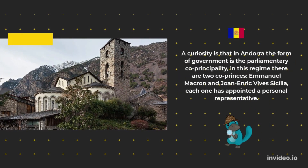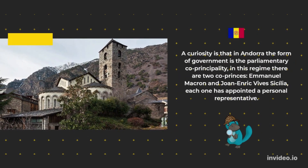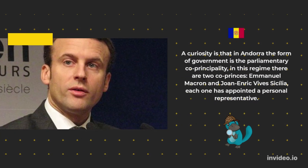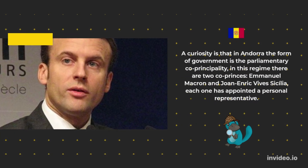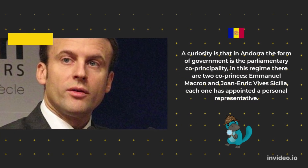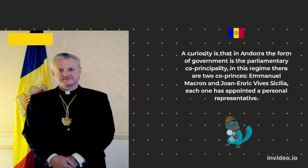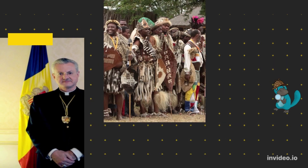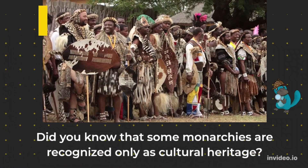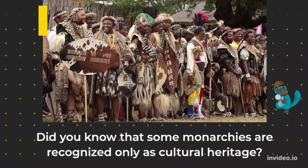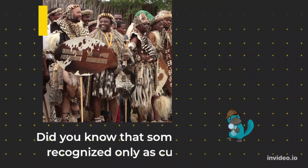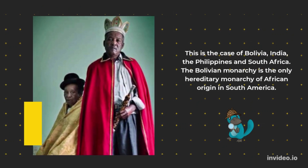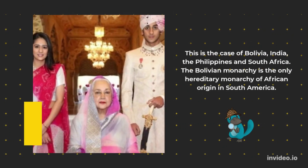A curiosity is that in Andorra the form of government is the parliamentary co-principality. In this regime, there are two co-princes: Emmanuel Macron and Joan-Enrique Vives Cecilia, each of whom has appointed a personal representative. Did you know that some monarchies are recognized only as cultural heritage? This is the case of Bolivia, India, the Philippines, and South Africa.